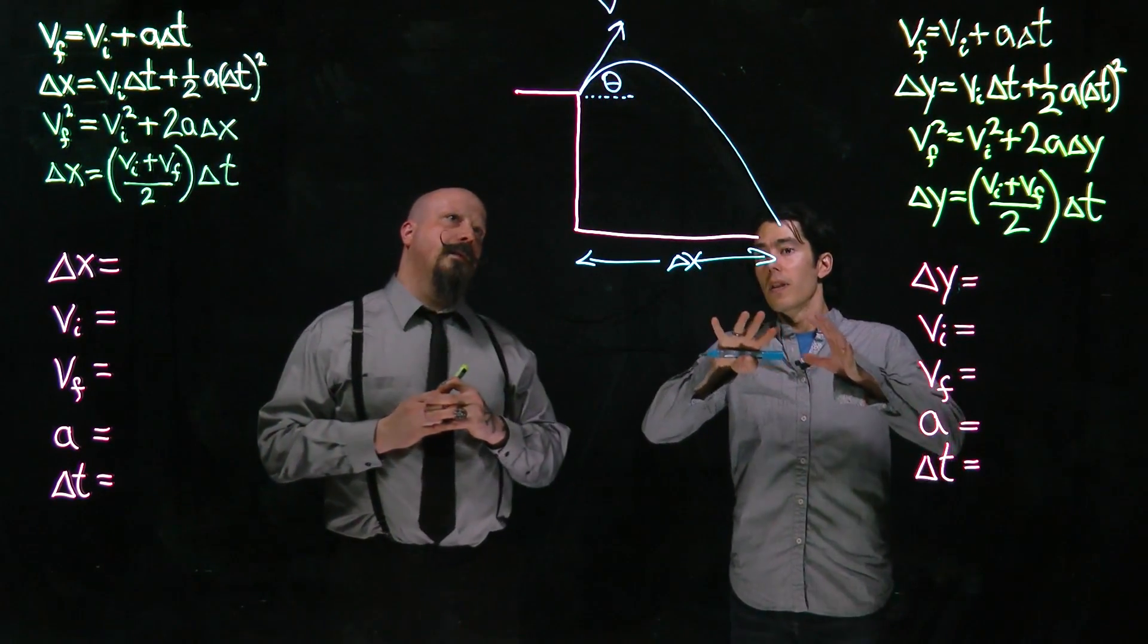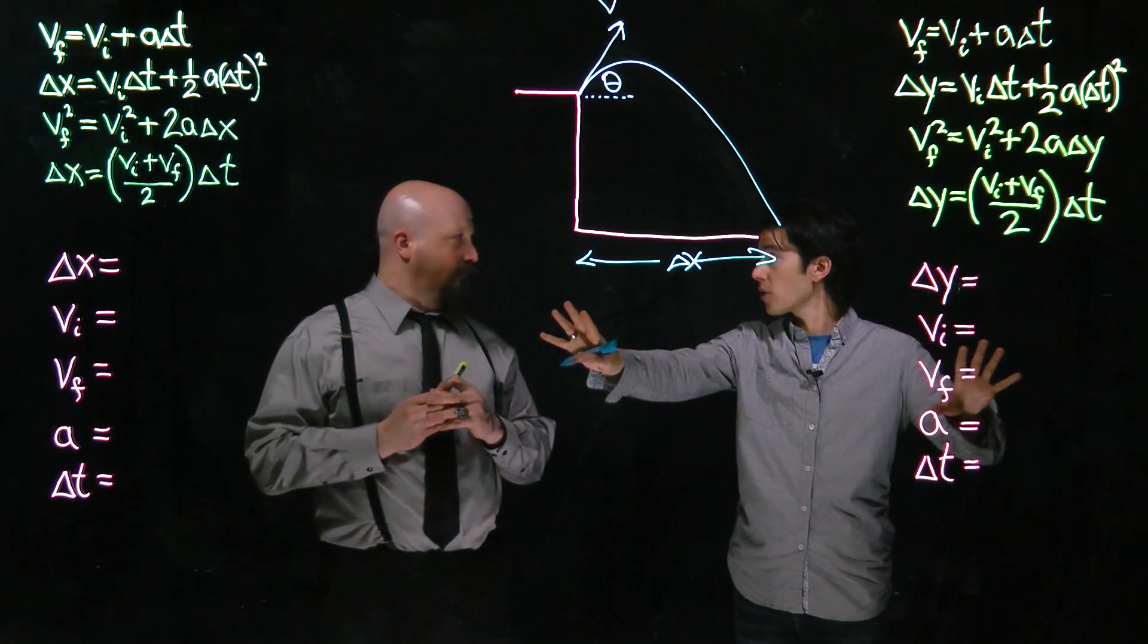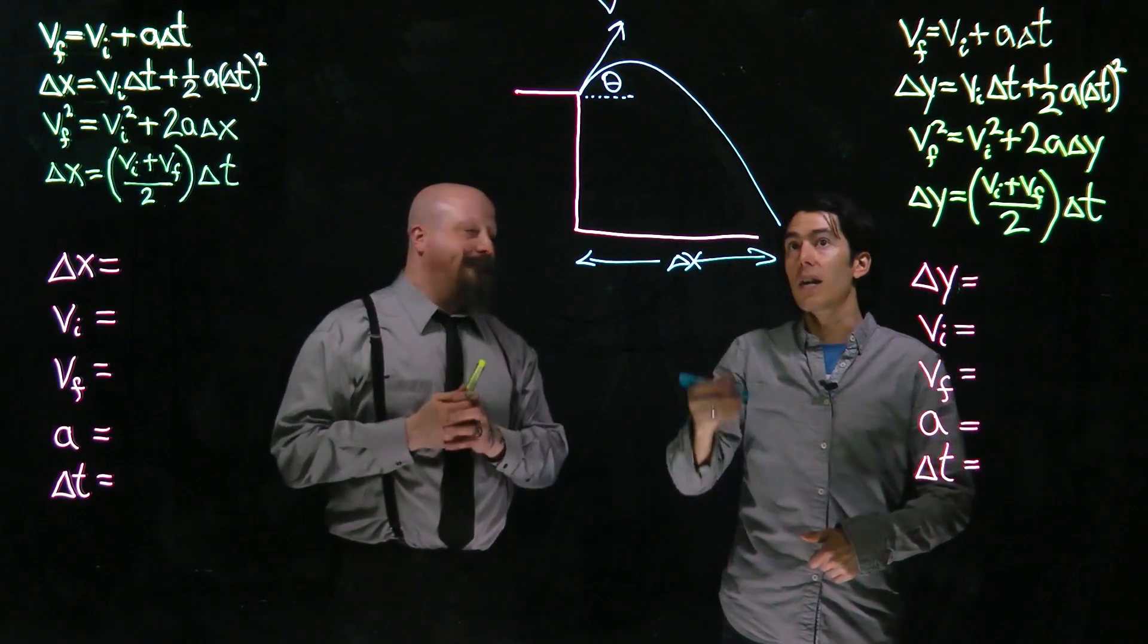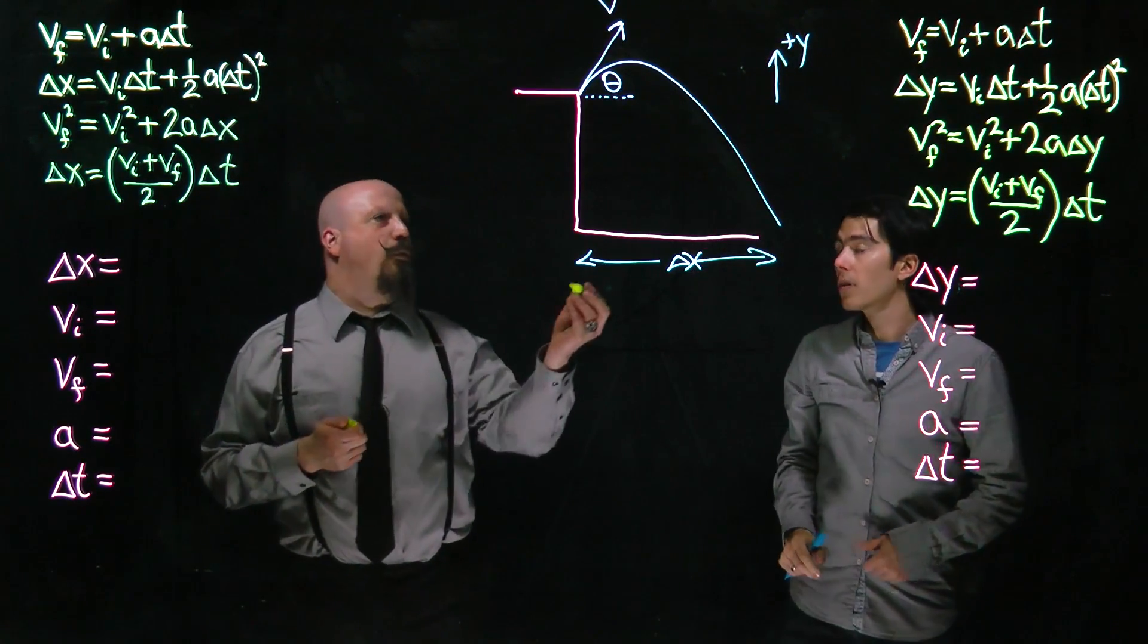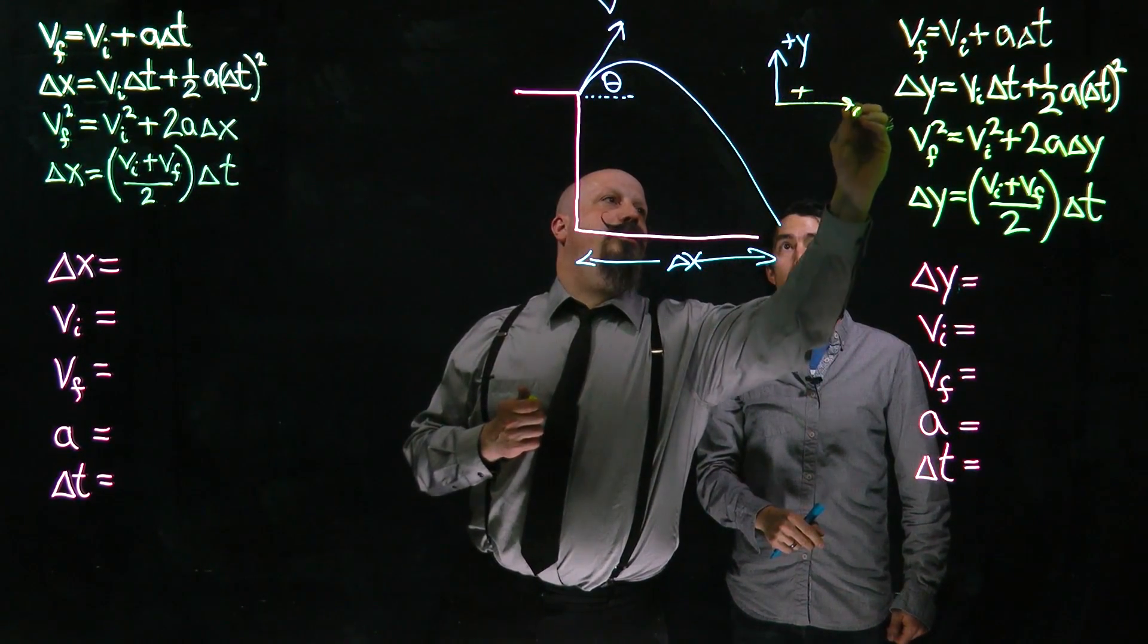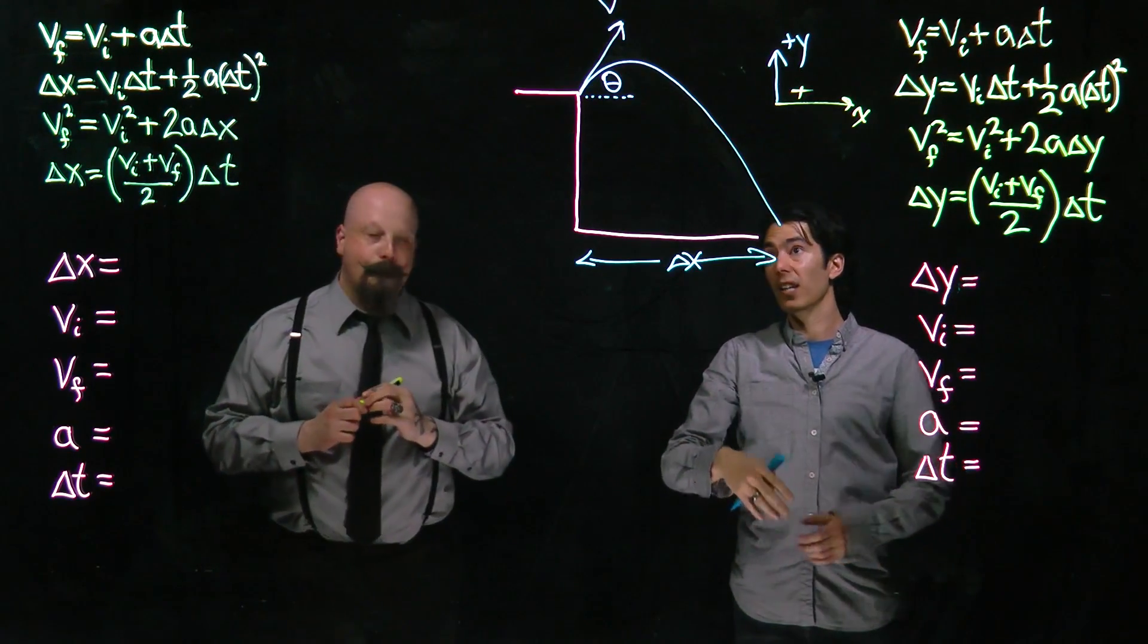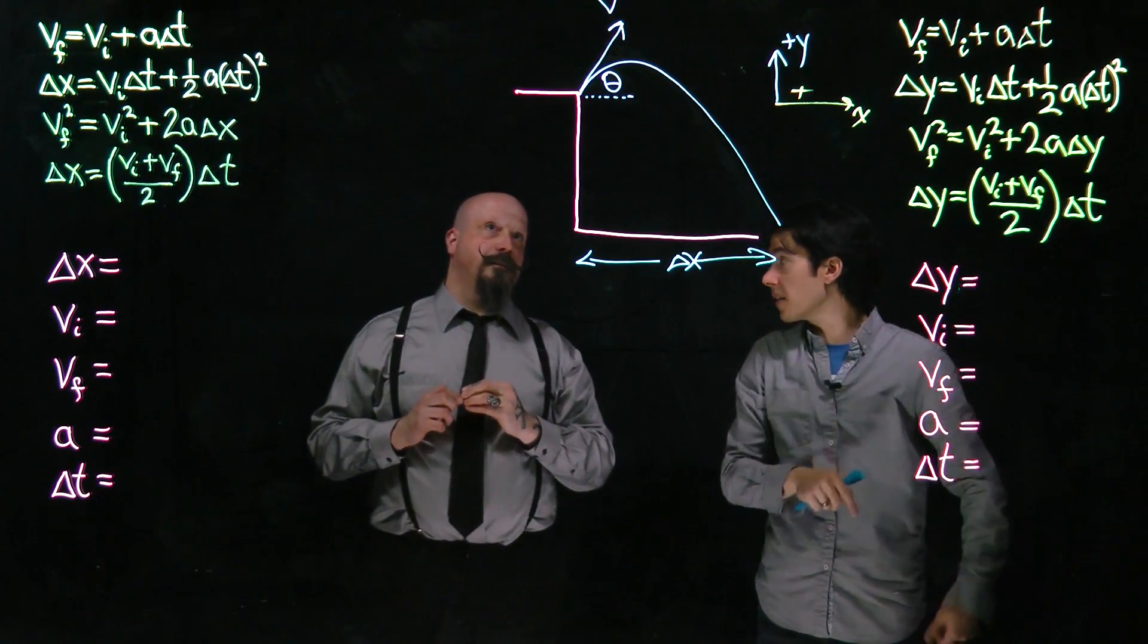Now, like any 2D problem, we can break this into two separate one-dimensional problems. Right, x and y. Yeah, so I'm going to start by defining the positive y direction to be upwards, and we'll make the positive x direction be to the right. Now it's a matter of taking a look at what we know and starting to fill in these quantities.